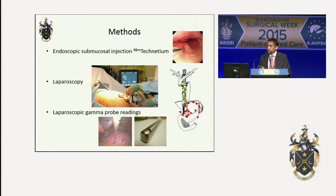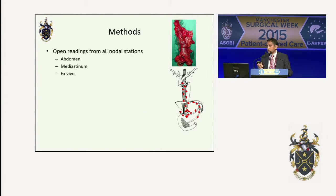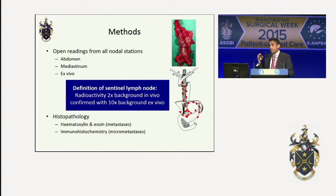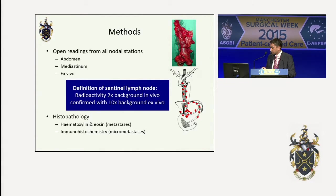This was followed by laparoscopy, and using a laparoscopic gamma probe, we took readings from all abdominal lymph node stations. The rest of surgery continued as standard, and we repeated gamma probe readings in the open setting from the abdomen, the mediastinum, and ex vivo. We used the proven definition of a central node as in vivo twice background radioactivity, confirmed ex vivo more than 10 times background radioactivity.